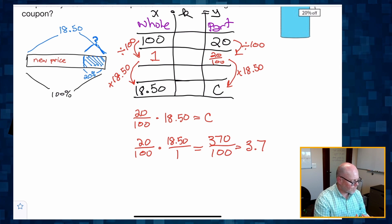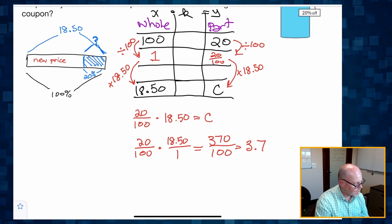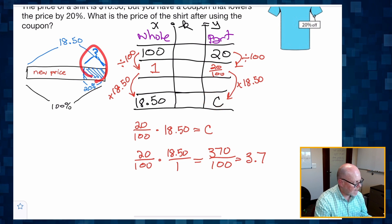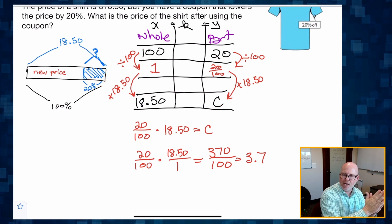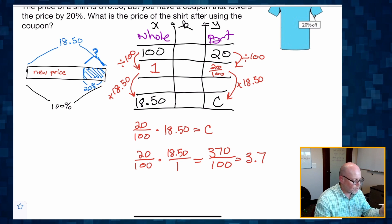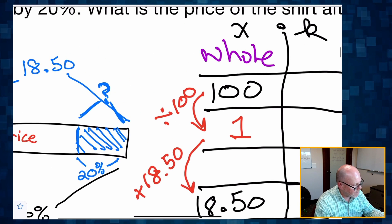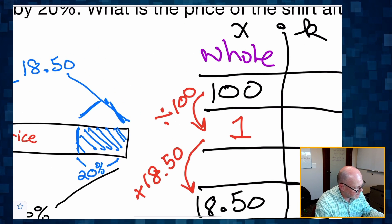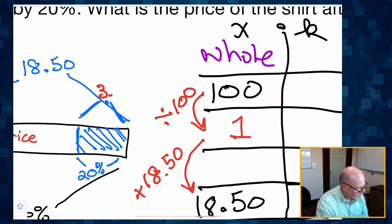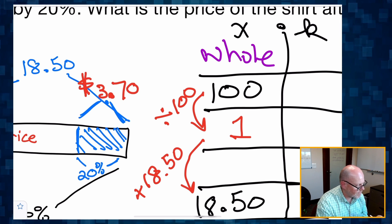So what does 3.7 mean? Well, 3.7 represents this value that got cut down. So the price got lowered by 3.7. So it got lowered. It got lowered by $3.70.